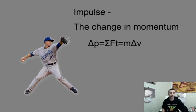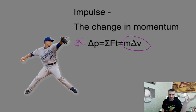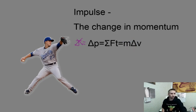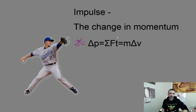Impulse is defined as the change in momentum. We express it as delta P for the change in momentum, or sometimes capital J, though that's rare. Delta P equals the object's mass times its change in velocity. But it's also equal to the net force times time. So why is there a picture of a baseball pitcher? The question is: why does he reach back so far? There are a couple of conceptual aspects of impulse we can apply here.